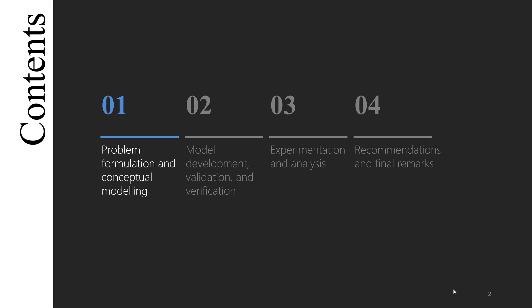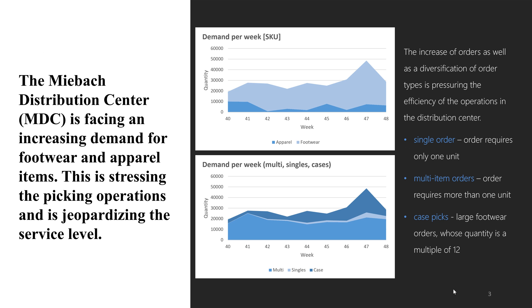The proposed methodology for wave planning will also be discussed. The MEI-BAC distribution center, which will be called MDC from now on, handles footwear and apparel products. In addition to the specific workflows associated with footwear and apparel products, MDC is facing an increasing demand for SKUs. The MDC must handle three different order types: single orders, multi-item orders, and case peaks.